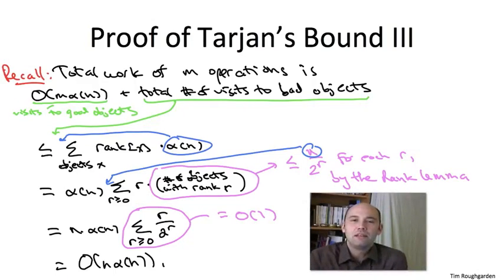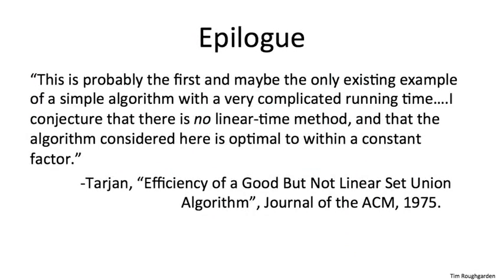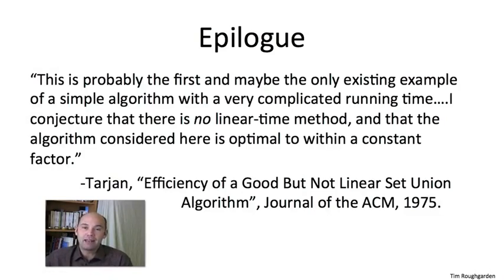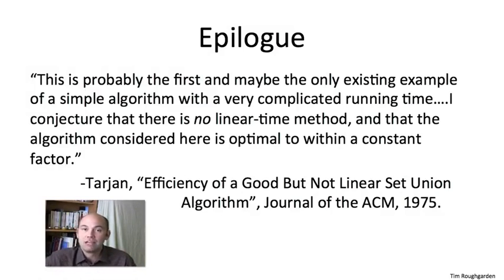And there you have it — you now understand in full detail one of the most amazing results in the history of algorithms and data structures. Tarjan's bound is unimaginably close to being linear without actually being linear — it's off by this inverse Ackermann function factor. From a practical perspective, for any imaginable value of N, α(N) is at most four, giving a linear time bound for imaginable values of N. Even the Hopcroft-Ulman log-star bound, log* is at most five for any imaginable value of N, so that also is in essence a linear time bound for all practical purposes.